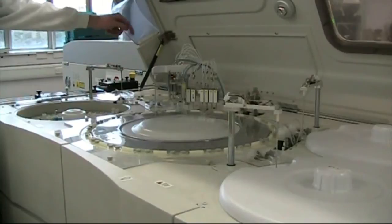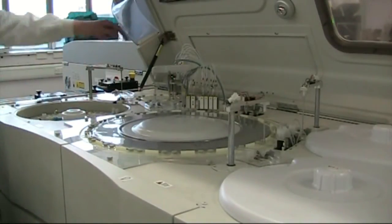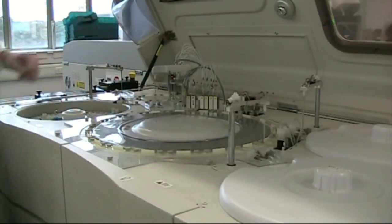And then it takes separate aliquots from the dilution turntable and puts those into a sample turntable there. You can see the probe is moving that sample to the sample turntable.